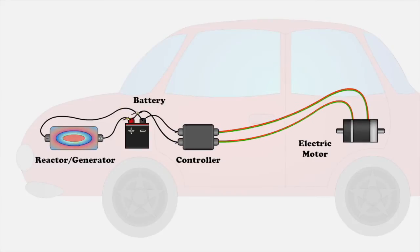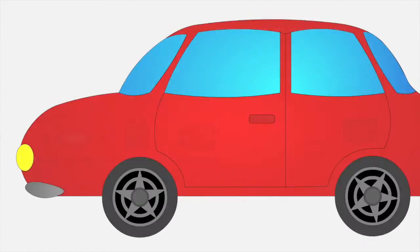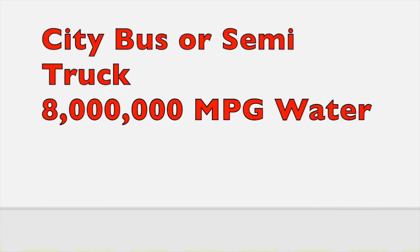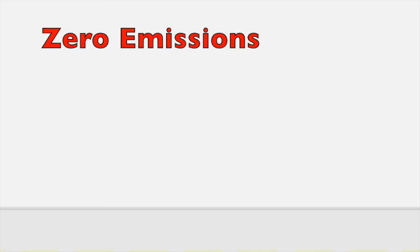This onboard primary energy source will permit a car to go 35 million miles non-stop on the energy from a gallon of water. A city bus or semi truck will go about 8 million miles on the same amount of fuel. Truly zero emissions.